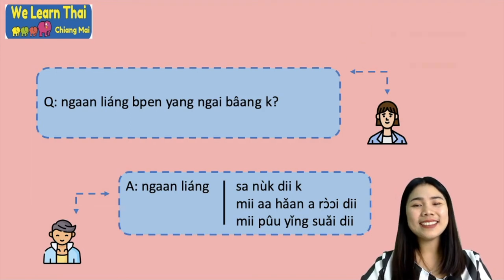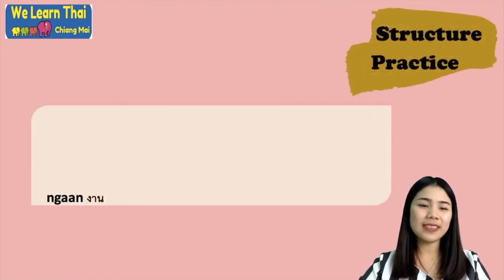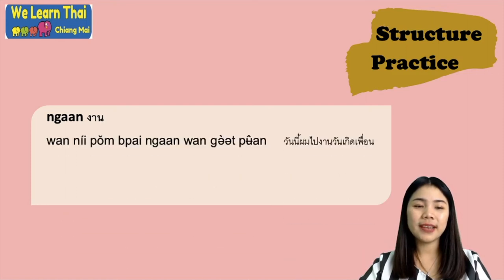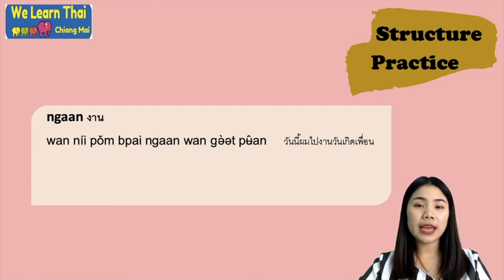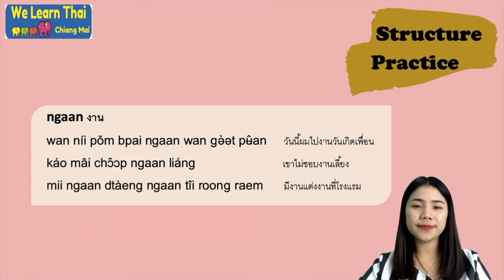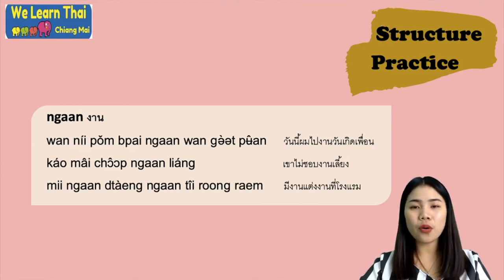Alright, next let's talk about structure practice. The word งาน means event or affair. For example: วันนี้ผมไปงานวันเกิดเพื่อน means today I'm going to my friend's birthday. เขาไม่ชอบงานเล่น means he doesn't like parties. And มีงานแต่งงานที่โรงแรม means there is a wedding ceremony at the hotel.